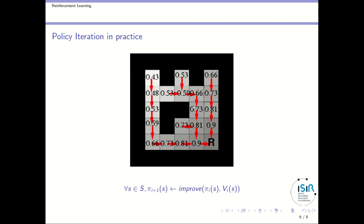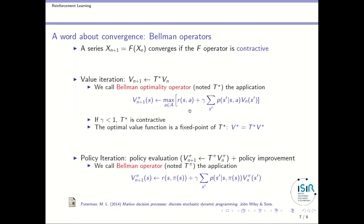You can notice that policy iteration required fewer iterations than value iteration, but each iteration was more expensive because evaluating each policy is a costly process. These classes also come with labs, and in the first lab you will code value iteration and policy iteration algorithms to better understand them.